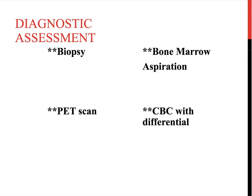The CBC with differential is something that gives us a lot of information about a patient's hematologic status — a red blood cell count, white blood cell count, and platelet count. The differential will tell us exactly how many of each specific type of white blood cell. It will also tell us the hemoglobin and hematocrit. We need to know hemoglobin levels to assess the oxygen-binding capability, and hematocrit gives us a picture of whether the patient has enough red blood cells to carry oxygen to the tissues.